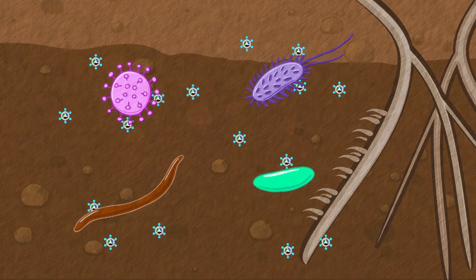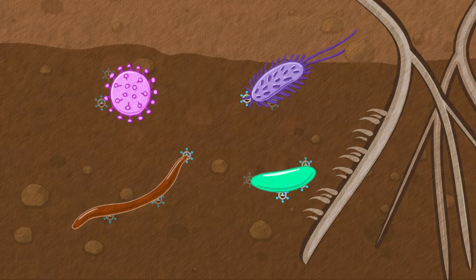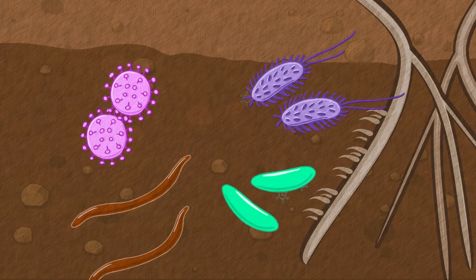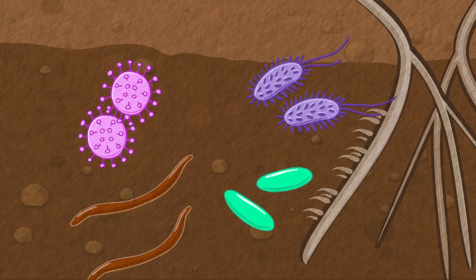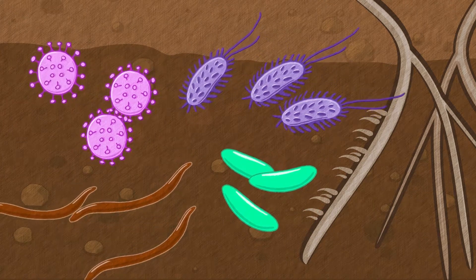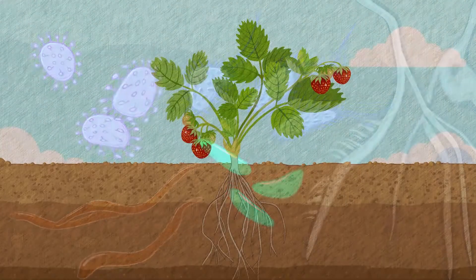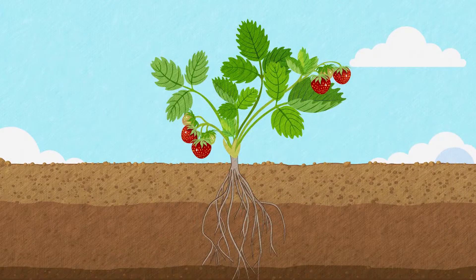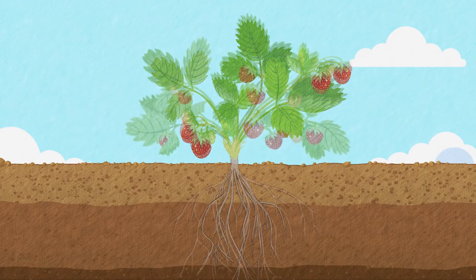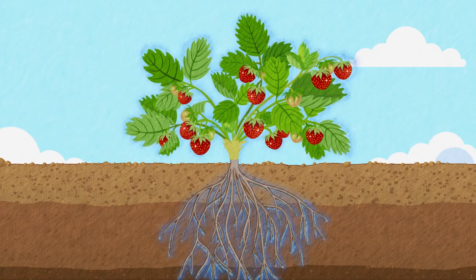Microbes also take in carbon and nutrients at a more efficient rate with MCT, allowing beneficial microbes to reproduce more quickly and to be more active. This results in a healthier soil. With carbon and nutrients immediately available, plants and microbes can flourish.